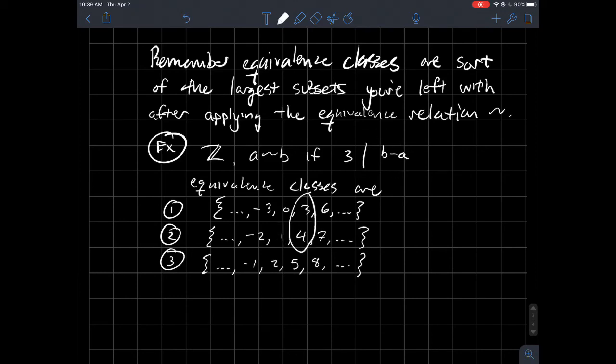What else, though? 3 and 4 are not equivalent to each other because their difference is 1, which is not divisible by 3. So that's why they lie in different sets. So I hope that makes sense how we've split the integers into these three pieces. So those are called the equivalence classes.